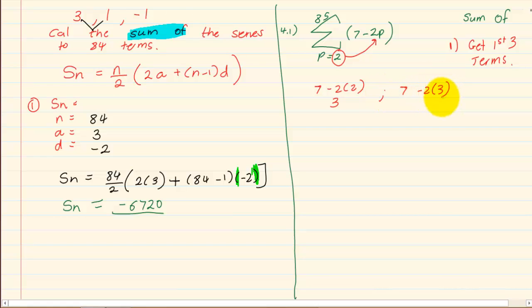Then we have 7 minus 2 into 3 which equals 1, and we have 7 minus 2 into 4 which equals minus 1. So we now have the first three terms. Once we have the first three terms we do the test and we decide if it's arithmetic or geometric. When we do the test here we'll see that we have minus 2, giving us an arithmetic number pattern.